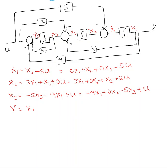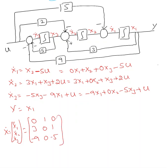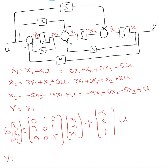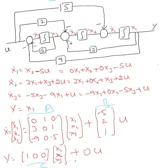Writing the full equation in matrix format: x_dot equals [x1 dot; x2 dot; x3 dot] equals [0, 1, 0; 3, 0, 1; minus 9, 0, minus 5] times [x1; x2; x3] plus [minus 5; 2; 1] times u. And y equals [1, 0, 0] times [x1; x2; x3] plus 0 times u. The elements come from the coefficients of x1, x2, x3 in each equation. These are matrix A, B, C, and D.